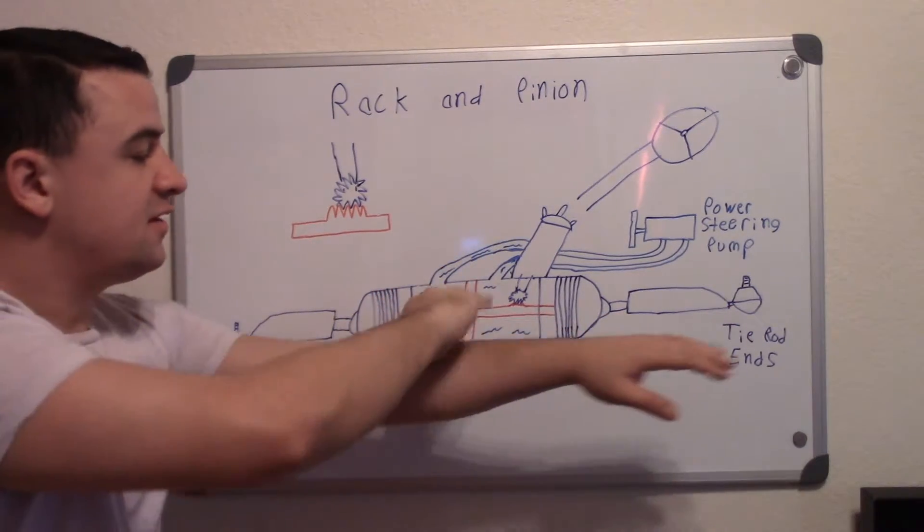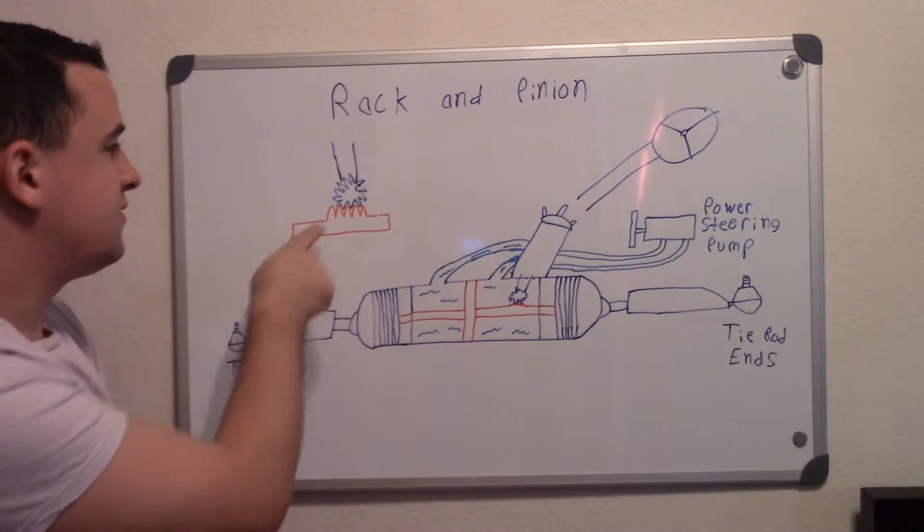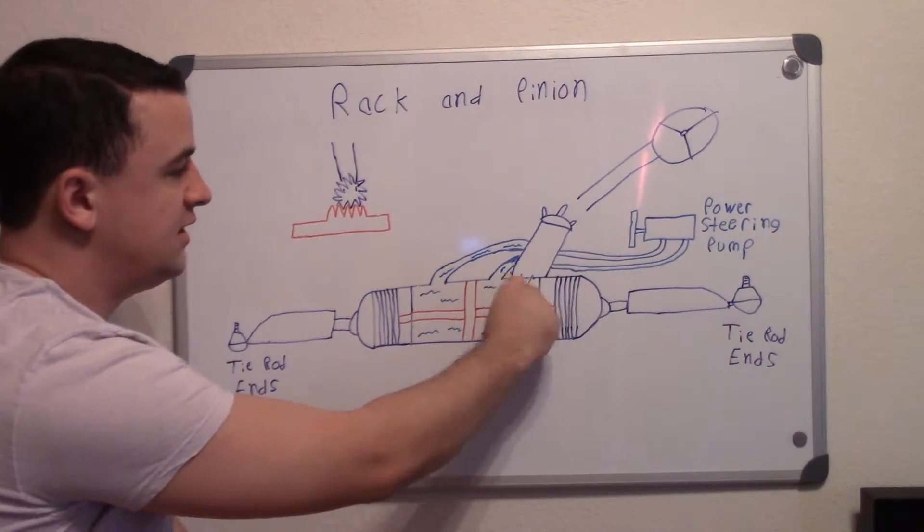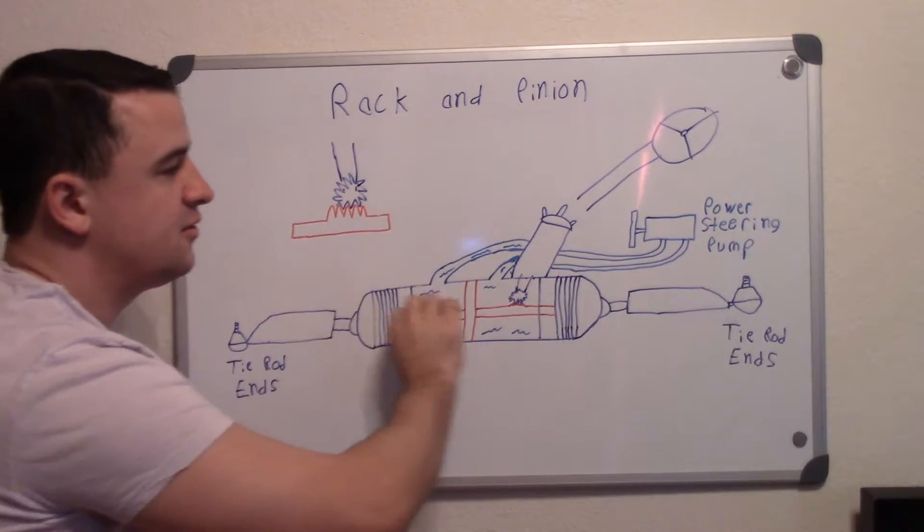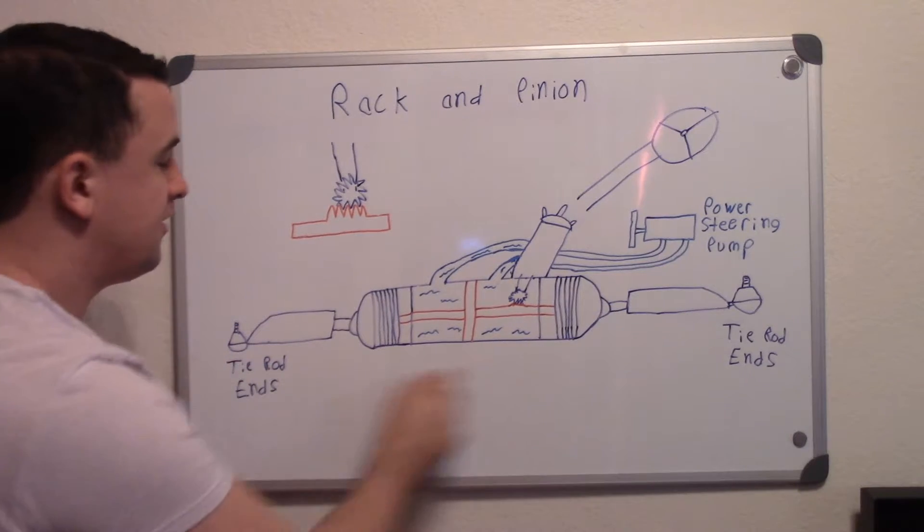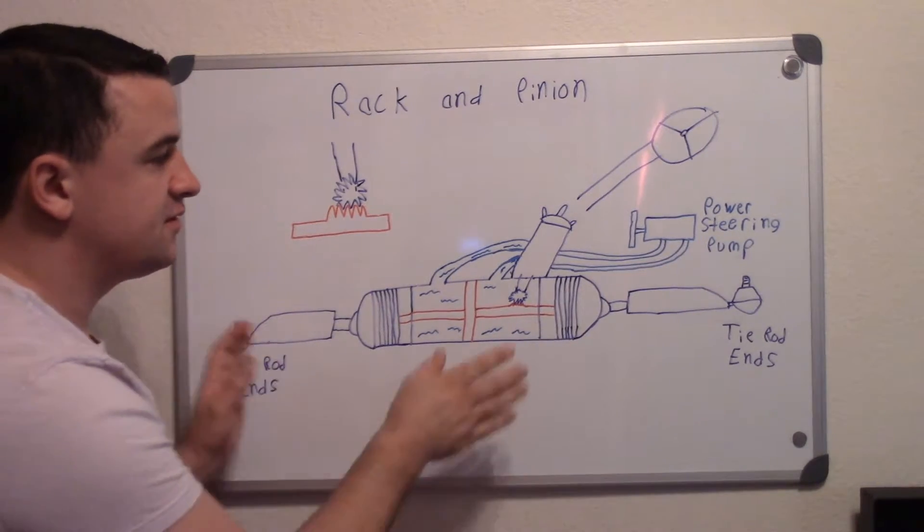So if I spin like this, it'll push that way. If I spin like that, it'll push back this way. And that's essentially what it does here. So when you turn your steering wheel, it spins it and pushes it one way or pushes it the other, which then in turn connects to out here your tie rod ends that connect to your wheels and turn your wheels.